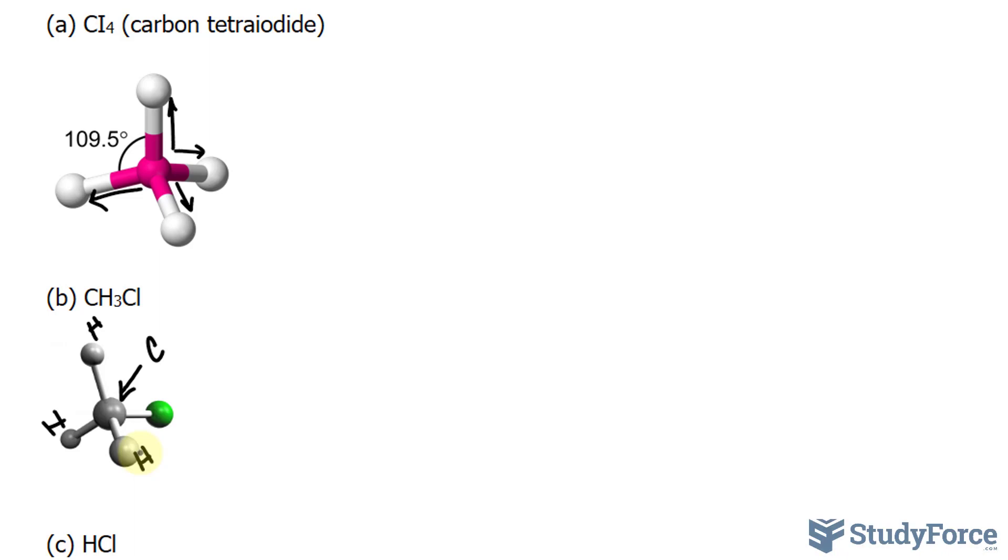So the carbon will pull the electrons towards it, although the difference in electronegativity is so small that it's nearly nonpolar. On the other hand, we have chlorine, which is much more electronegative than carbon, and it will pull the electrons towards it.